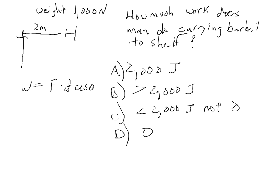Ready for the correct answer? The correct answer, again, is D. This time, we do have a displacement, a displacement of two meters. And we do have a force. The force that the man has to apply is 1000 newtons. But the force that the man has to apply to the barbell to keep it from falling down is up. And the displacement is horizontal. Therefore, the angle between the force and the displacement is equal to 90 degrees. And the cosine of 90 degrees is zero. So there's no work done.